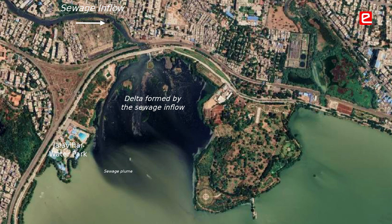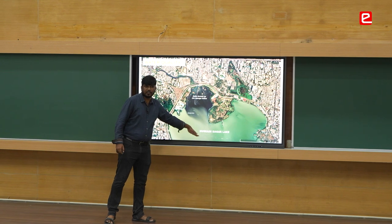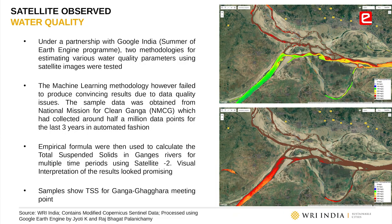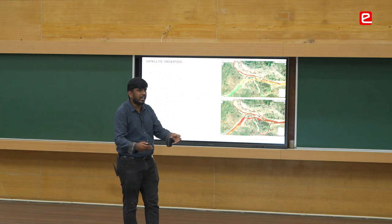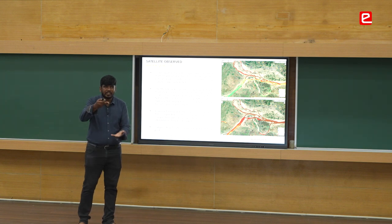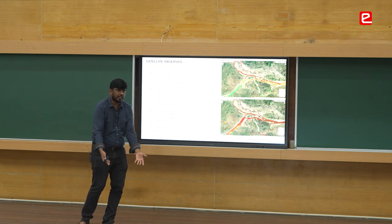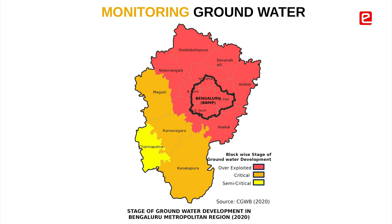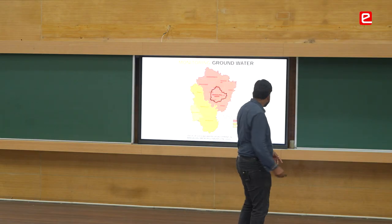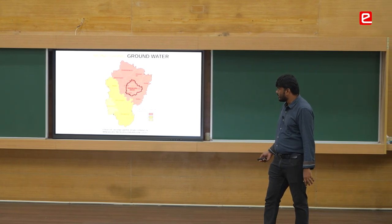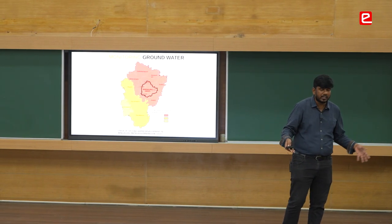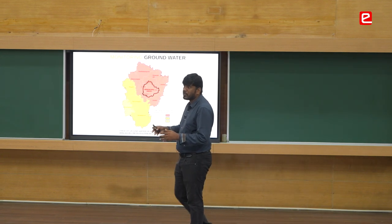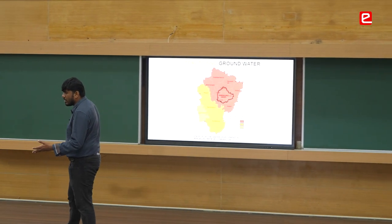This is the Hyderabad example — Hussain Sagar Lake, showing sewage flow. This is the Ghaghra River and the Ganga River — you can note the difference in suspended solids, because a lot of sand is coming in. But satellites measure only the top surface — I do not know anything about water quality one foot below. Monitoring groundwater is also a big problem. This is data from the Central Groundwater Board — it is not just Bangalore City that is facing groundwater problems, but the entire region. The groundwater is over-exploited, wells are not properly monitored, and data quality is questionable.